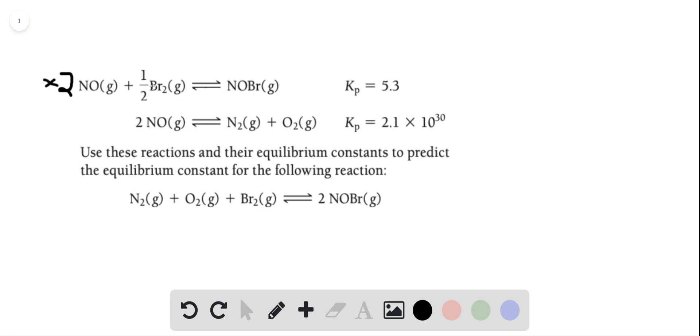So that gives us one Br and two NOs. In this reaction down here, we have N2 and O2, one each, but they're on the wrong side of the equation. We need to flip this. I'm going to use these arrows to show we're flipping the whole equation around.